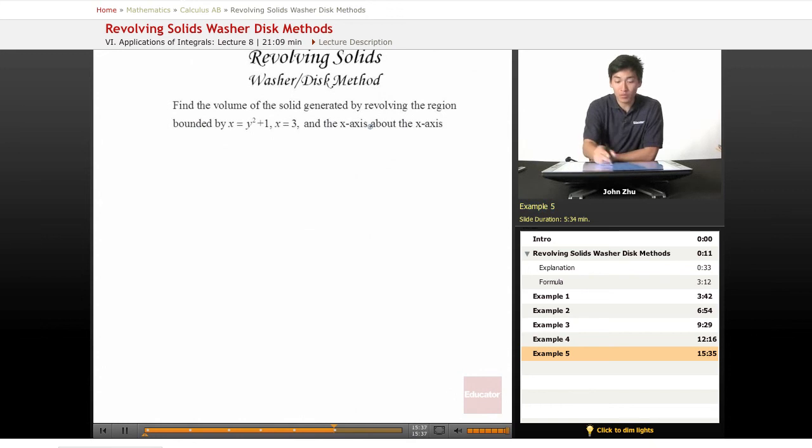For example here, we want to find the volume of another solid generated by revolving the region bounded by x equals y squared plus 1, x equals 3, the x-axis, and about the x-axis.